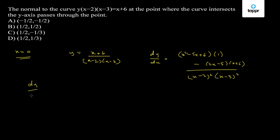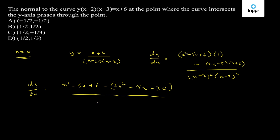So dy/dx is equal to (x² - 5x + 6 - 2x² + 7x - 30) upon (x - 2)²(x - 3)². This simplifies to (-x² - 12x + 36) upon (x - 2)²(x - 3)².